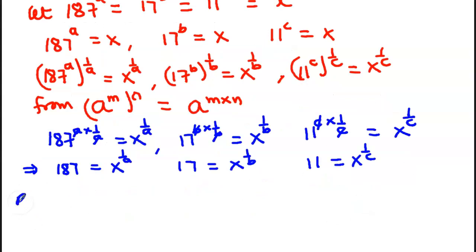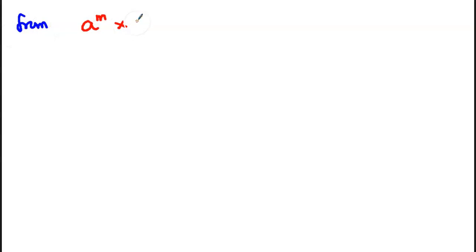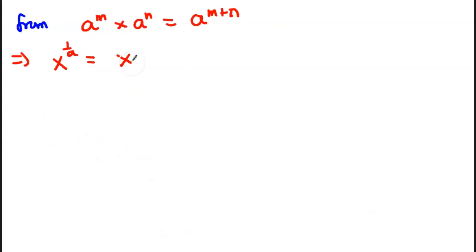Remember 187 is the same as 17 times 11. So 187 equals X to the power 1 over A equals, in place of 17 we put X to the power 1 over B, times X to the power 1 over C. From indices, A to the power M times A to the power N equals A to the power M plus N, so this implies X to the power 1 over A equals X to the power 1 over B plus 1 over C.